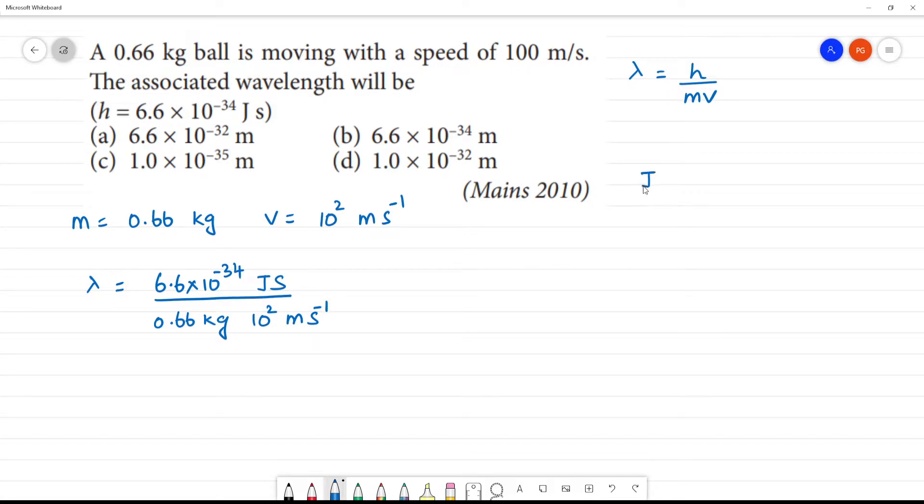Units is equal to joule. This is important, this is an extra step. Joule is equal to kilogram meter square by second square.